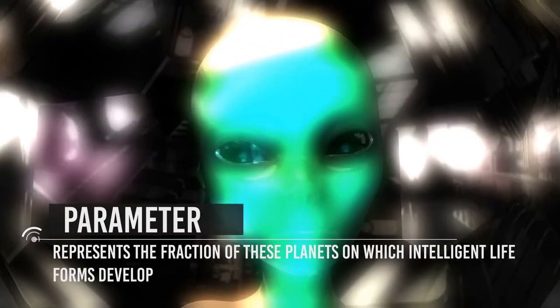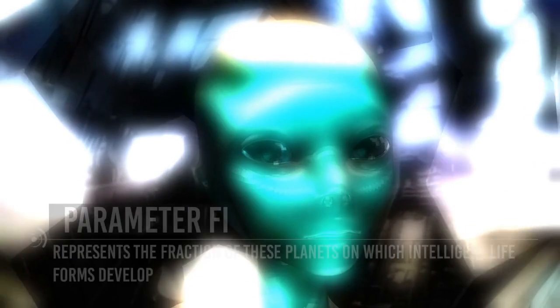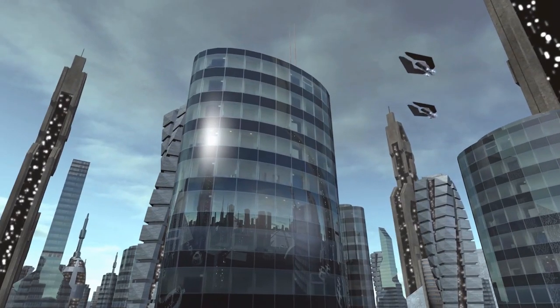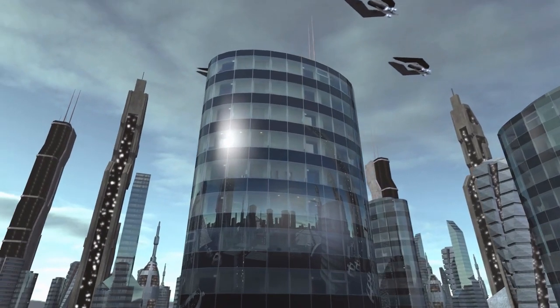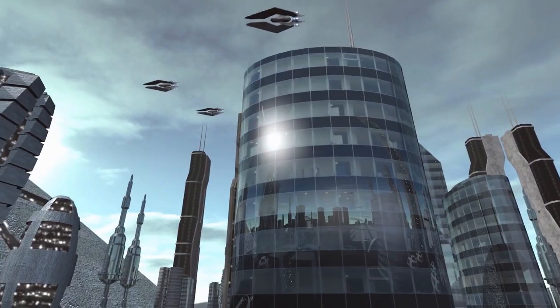FI represents the fraction of these planets on which intelligent life forms develop. This term must take into account how many, among all those lucky planets that have developed life, have been able to guard it and allow it to evolve as intelligent life. What actually makes life evolve up to intelligence?